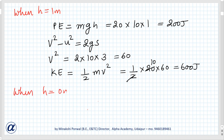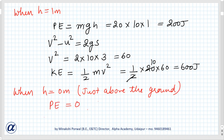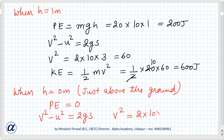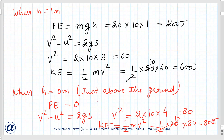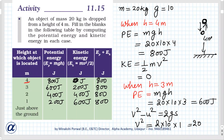When h equals 0 meters, just above the ground: potential energy is 0 because h is 0. Using v² − u² = 2gs, v² = 2 × 10 × 4 = 80. Kinetic energy is half mv² = ½ × 20 × 80 = 800 joules. So just above the ground, potential energy is 0, kinetic energy is 800 joules, and the sum is 800 joules.